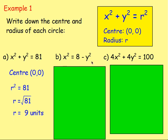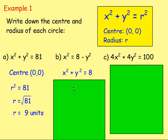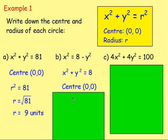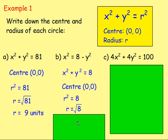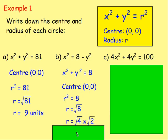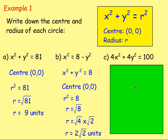This next one: x-squared equals 8 minus y-squared. What do you have to do first? Rearrange it — perfect! You need x-squared plus y-squared equals a number, so add y-squared to both sides. Then you get x-squared plus y-squared equals 8. From there, you know the centre is going to be (0,0). r-squared equals 8, so you root it to get r. You wouldn't just leave it as root 8 — you can split that up using surds: root 8 equals root 4 times root 2, and root 4 is 2, so that gives 2 root 2 units. That's your radius. If you ever get a surd, it's best to simplify it.